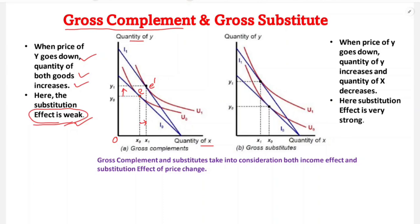So in this case, if both goods' quantities increase to get a higher level of satisfaction, then we can say the goods are gross complements. The gross complement concept takes into account both the income effect and the substitution effect of price change.